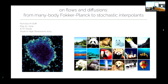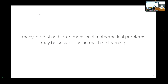While these two application domains at first seem completely unrelated, I'll show that the underlying mathematical structure is the same, and we can use insights from generative modeling to develop algorithms to solve the many-body Fokker-Planck equation and compute entropy production rates. We can also use insights from high-dimensional PDEs to design new algorithms for generative modeling. The key takeaway is that there are many interesting high-dimensional mathematical problems that we simply cannot solve using standard techniques of numerical analysis, but which we may be able to solve using machine learning — a paradigm shift in computational mathematics.